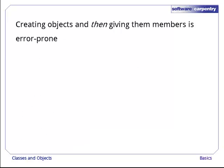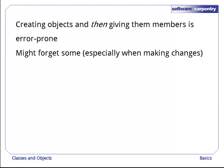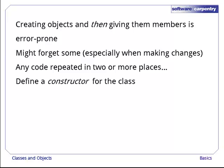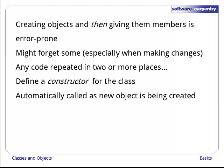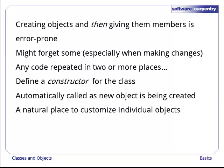Creating objects and then giving them the member variables that their methods depend on is a very error-prone way to program. For one thing, it's all too easy to forget the required member variables or to give them the wrong names, especially if we're creating those objects in many different places. Object-oriented languages solve this problem by allowing us to define something called a constructor for the class. Constructors are automatically called as new objects are being created, which makes them a natural place to customize individual objects by creating member variables.